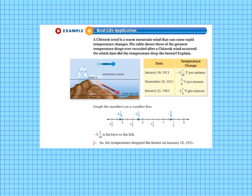So we are going to graph the numbers on a number line. That's our strategy. So the numbers we need to graph are over here in this temperature change box or column. So we have negative 3 and 1 tenths. We have negative 5 eighths. And we have negative 2 and 1 fifths.